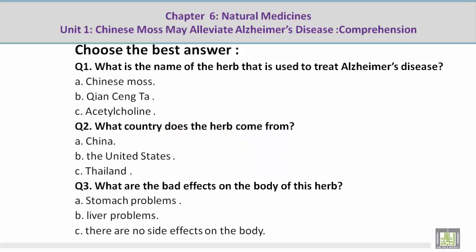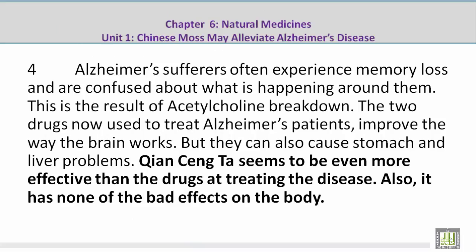Question number 3: What are the bad effects on the body of this herb? C — There are no side effects on the body. The highlighted sentences read: Qian Seng Ta seems to be even more effective than the drugs at treating the disease. Also, it has none of the bad effects on the body.